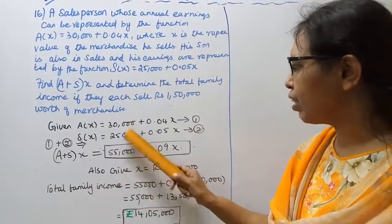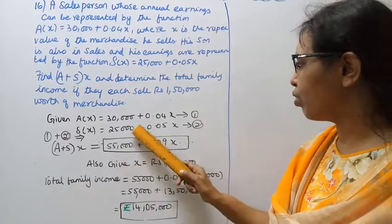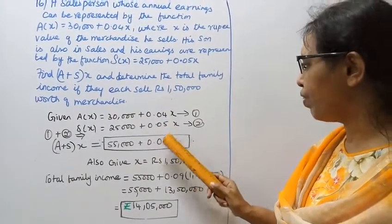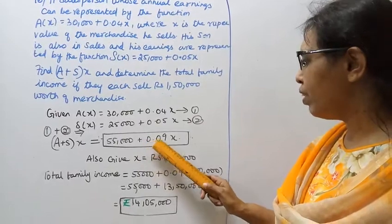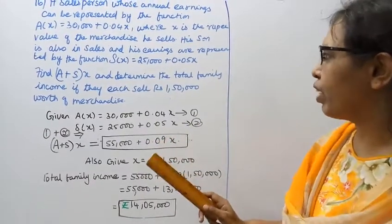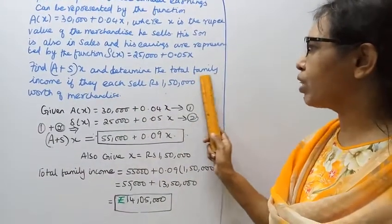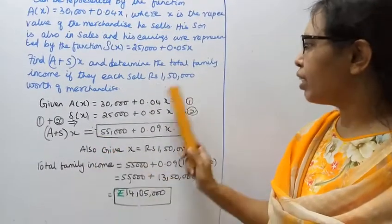and 0.04x + 0.05x = 0.09x. To find the total family income, we substitute the given value.